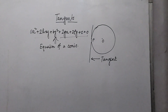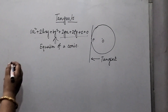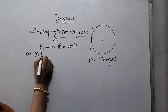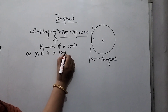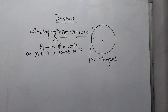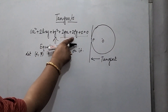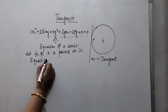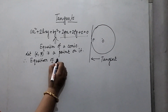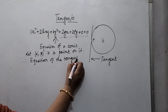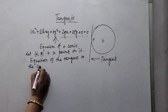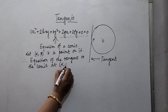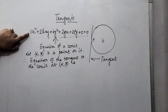Now let us consider that any arbitrary point (alpha, beta) is existing on it. So let (alpha, beta) be a point on it. Then let us see how we can get the equation of the tangent at the point (alpha, beta) to this conic. The equation of the tangent to the conic at (alpha, beta) is as follows.